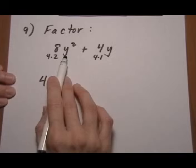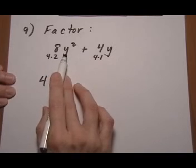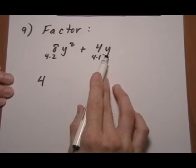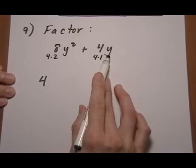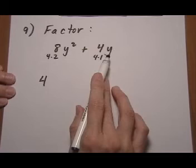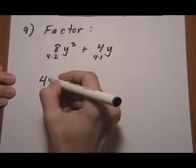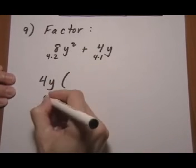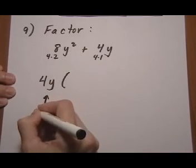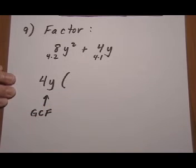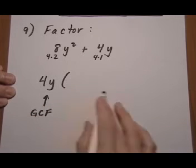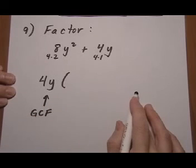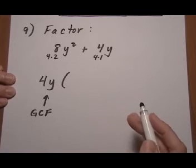Now do the variables — what can we pull out? This term has two y's, and this one has one y. The most we can pull out is 1 y, because that's all the second term has. So we're going to pull out one y. We put the GCF on the outside and the leftovers in parentheses. Factoring is sort of the opposite process of clearing parentheses — you're putting parentheses back in.